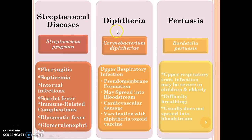Diphtheria is caused by Corynebacterium diphtheriae. The symptoms are upper respiratory infection, pseudomembrane formation, may spread into the bloodstream, and leads to cardiovascular damage. Vaccination with diphtheria toxoid vaccine may prevent human infection from Corynebacterium diphtheriae.